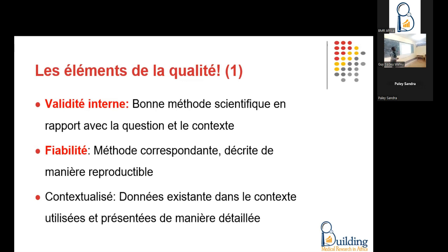Ou, cas plus simple : si quelqu'un veut connaître la prévalence du paludisme et décide que le paludisme est diagnostiqué sur la base de la fièvre — si quelqu'un a une température supérieure à 38°C, il considère que c'est le paludisme — il est clair que d'un point de vue scientifique, sa méthode n'est pas correcte. La validité interne de son travail n'est pas bonne. Il faut une bonne méthode scientifique en rapport avec la question posée et le contexte. Si quelqu'un veut faire une étude sur le diabète au Cameroun en ce moment, il est préférable d'utiliser les meilleurs moyens de diagnostic du diabète disponibles, comme l'hémoglobine glycée ou une glycémie à jeûne bien faite.